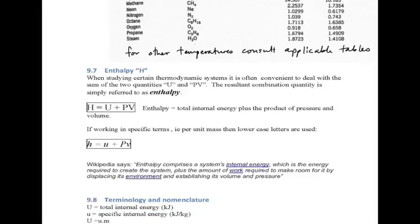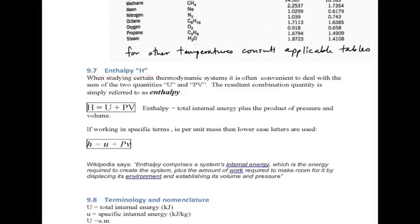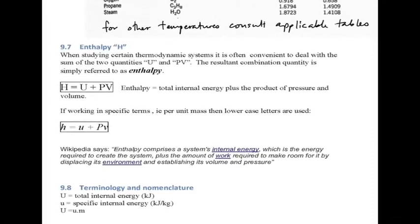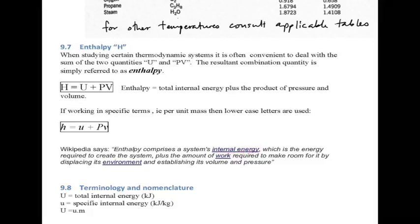Now we get to the big word: enthalpy, denoted by capital H in our studies. This one scares a lot of learners because the definition is a little abstract. Wikipedia puts it simply: enthalpy comprises a system's internal energy — the energy required to create the system — which is the energy possessed by the matter.